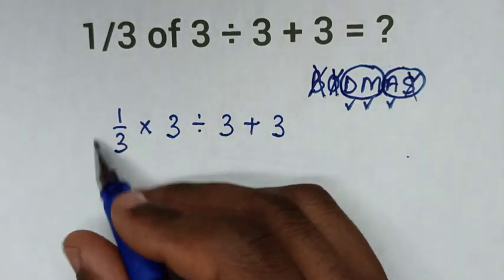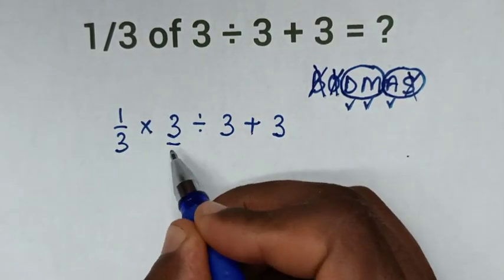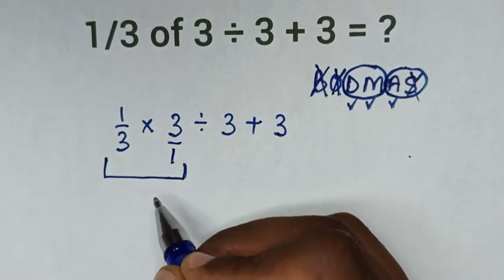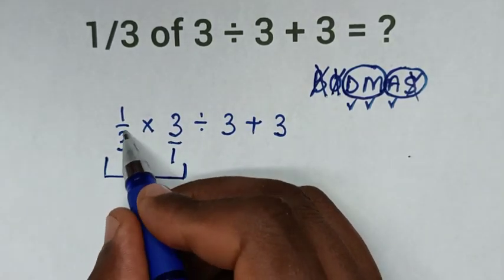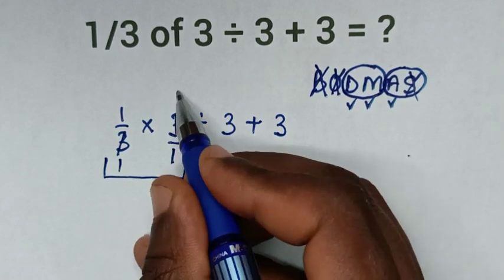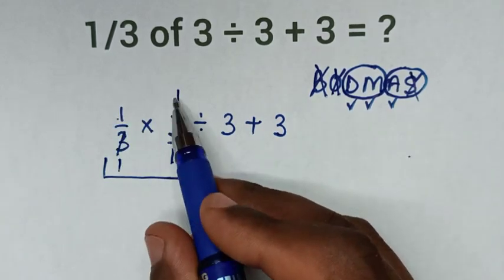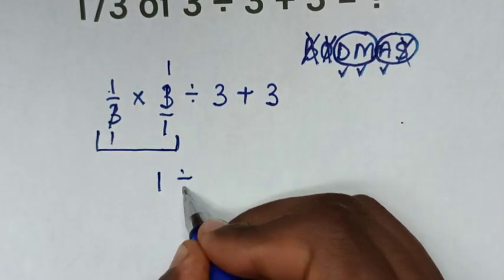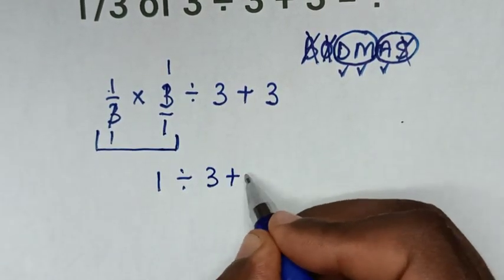Now from this multiplication, this is the same as 3 over 1. When we do this multiplication, to simplify, this will cancel by 1 and this by 1, so 1 times 1 is 1. Then divide by 3 plus 3.